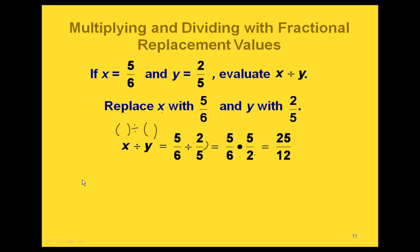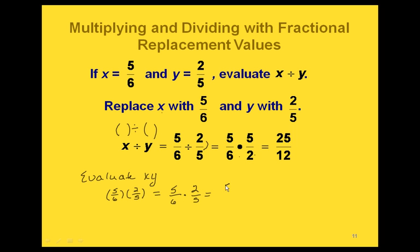Let's do one more example with these replacement values and evaluate the product xy. Using our parentheses, we replace x with 5 sixths and y with 2 fifths. That just gives us a multiplication problem: 5 times 2 on the top and 6 times 5 on the bottom. Since 6 isn't prime, we rewrite it as 2 times 3. We can then cancel our 5's and our 2's. We've canceled everything on the top so we still have a 1 there, and we have a 3 left on the bottom. This gives us 1 third.